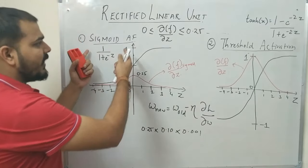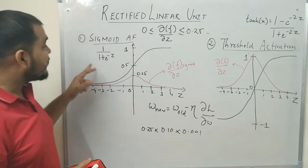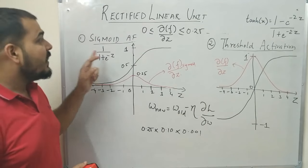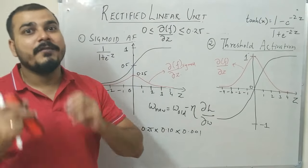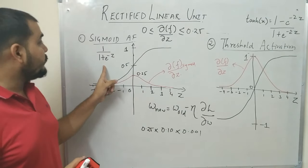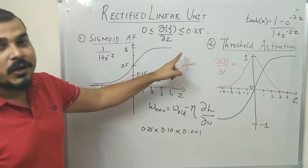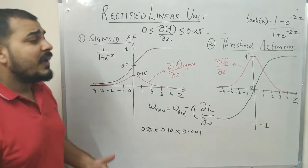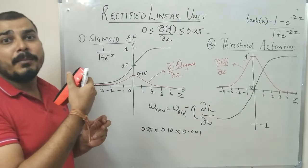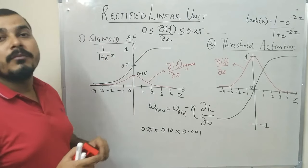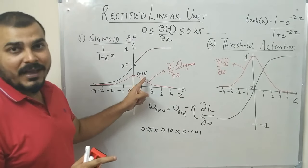Let us revise some concepts of the sigmoid activation function and threshold activation function. The sigmoid activation function equation is given by 1 divided by 1 plus e to the power of minus z. This z is basically the summation of weights multiplied by the input plus bias in each and every layer for each and every neuron. When that z value is passed to this equation, the sigmoid activation function transforms those values between 0 and 1. During back propagation, we need to find the derivative of the sigmoid activation function, and that derivative will always be ranging between 0 to 0.25 — that is mathematically proved.